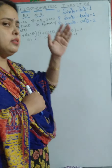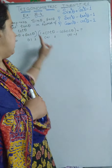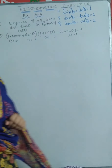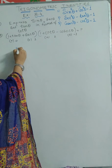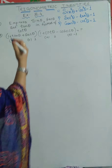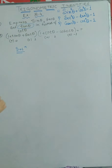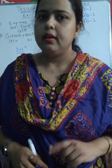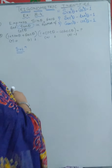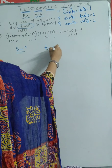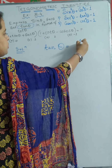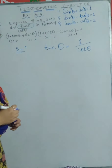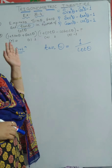Using the identities, we are going to write sin in terms of cot, sec in terms of cot, and tan in terms of cot. I am taking tan θ first. As all of you know the reciprocal relationships — what is the relationship between tan and cot? They are reciprocal to each other. So I can easily write tan θ = 1/cot θ.